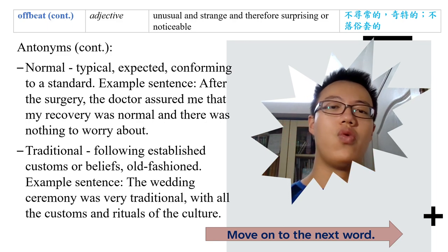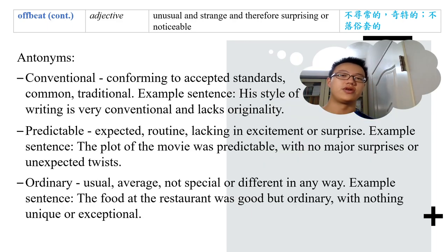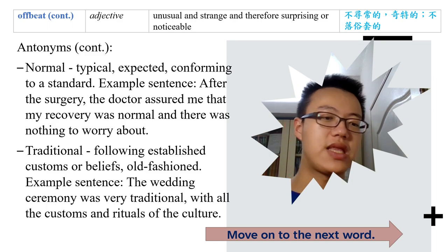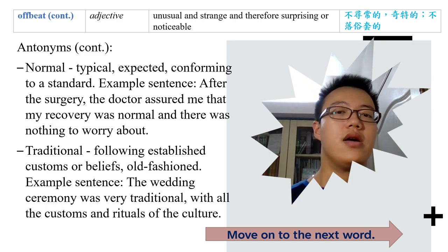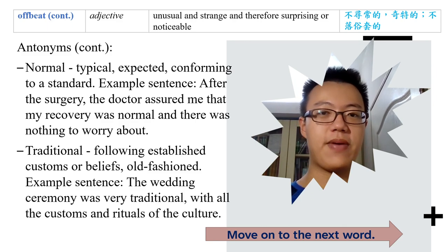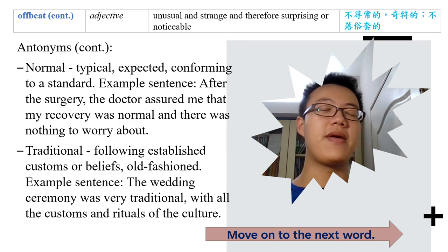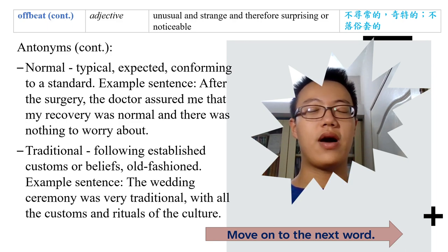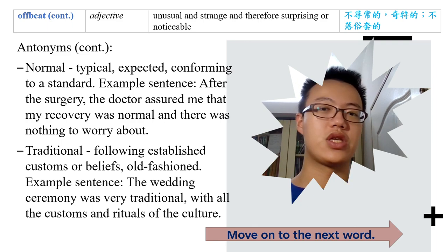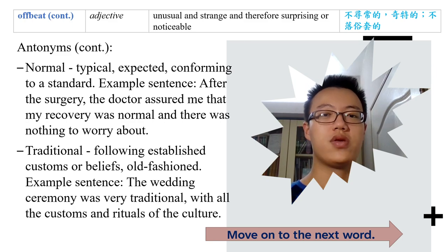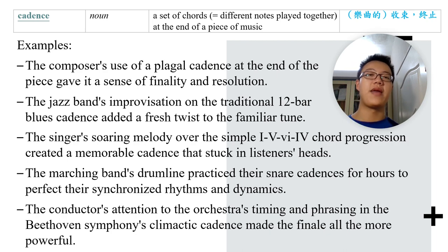Conventional and traditional are different. Conventional means conforming to accepted standards or common norms. Traditional means following established customs or beliefs from the past. Convention is wider than tradition — tradition refers to culture from the past and old ages, while convention can apply to modern ideas that are mostly accepted. These two words are not the same and we need to put emphasis on them.